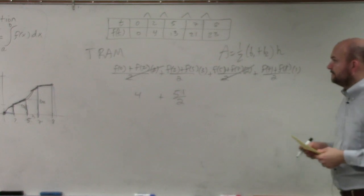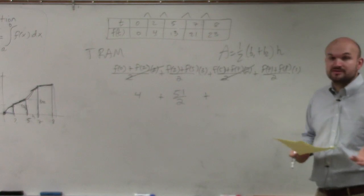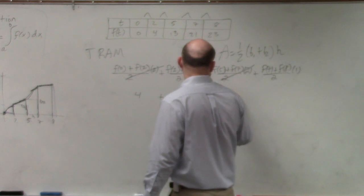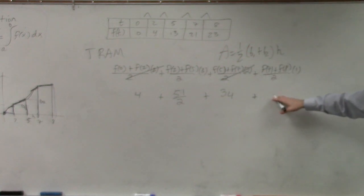Plug in your calculator if you need. 13 plus f of 5 plus f of 7, so that's going to be 13 plus 21. 13 plus 21 is going to be 34. And then plus, last but not least, we have f of 7 plus f of 8, which is going to be 44.